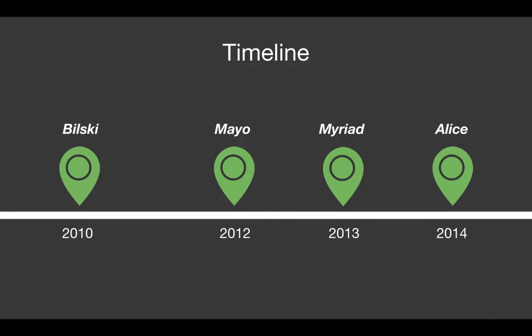Mayo and Myriad concerned laws of nature and natural phenomena. In Mayo, the court held that the claims at issue just described a relationship that existed in nature, so it fell under the laws of nature exception. After that, the USPTO issued guidance to examiners with a new three-step analysis. First, is the claimed invention directed to a process — an act or series of acts or steps? If yes, second: does the claim focus on the use of a law of nature, natural phenomenon, or naturally occurring relation? If also yes, third: does the claim include additional elements or steps such that the natural principle is practically applied and the claim amounts to significantly more than the natural principle itself? If no, the claim is not patent eligible.